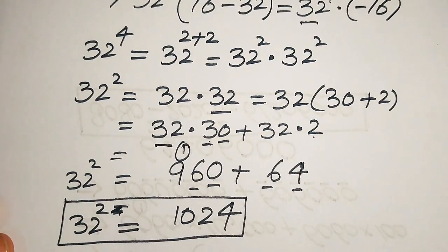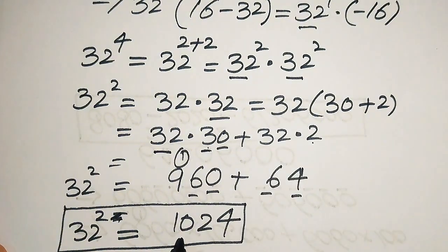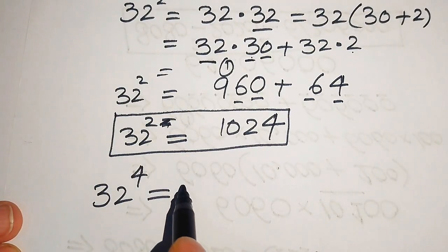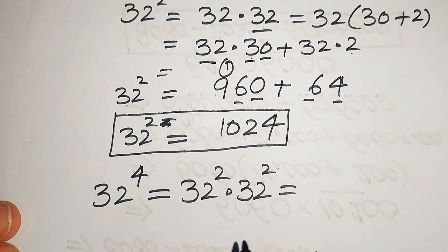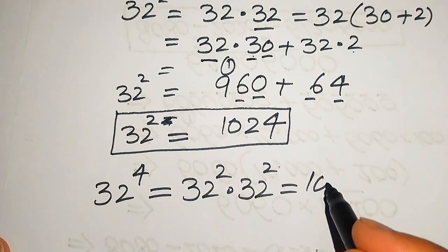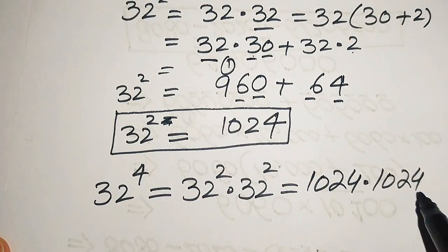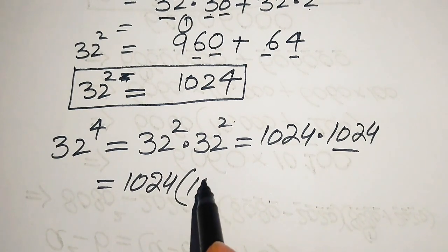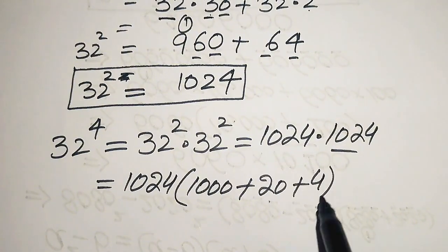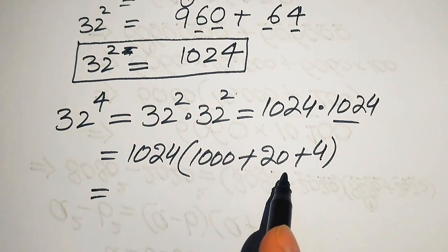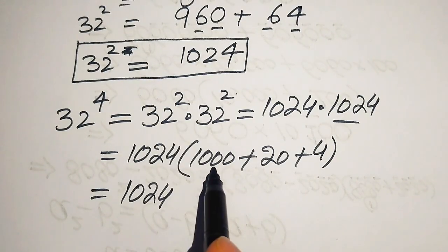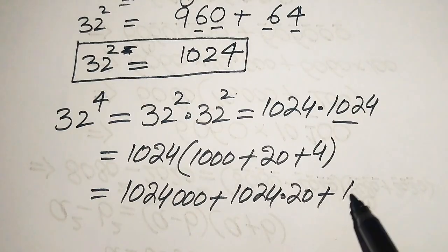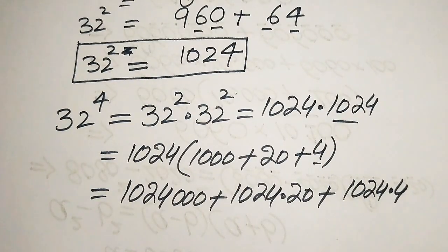So 32 squared equals 1024. Now we move backward and replace both 32 squared values with 1024, so 32 to the power of 4 equals 1024 multiplied by 1024. We break 1024 as 1000 plus 20 plus 4, so when we multiply 1024 with each of these values it will be written as 1024 times 1000, plus 1024 times 20, and plus 1024 times 4.